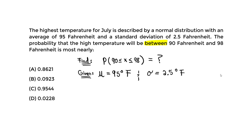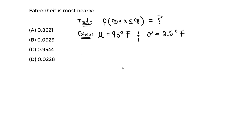We have those as given, and we want to find the probability of 90 to 98 degrees Fahrenheit. For the solution, I'm going to draw a standard normal distribution curve. Anytime we analyze a normal distribution, we apply the standardized type, which employs Z-scores. So anytime you hear 'standard,' we're going to employ those Z-scores.